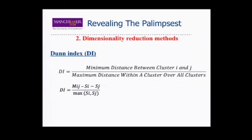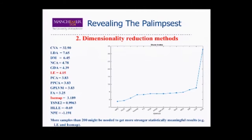Another index I tried is the Dunn index — basically minimum distance between cluster i and j over the maximum distance in a cluster over all clusters. This also gave good results, though maybe not as good as the Davies-Bouldin index. In this case, a higher value is better. Again, canonical variance analysis, linear discriminant analysis, and diffusion maps have the best values. The difference between CVA, which is 32, and the second method, linear discriminant analysis at 7.65, is quite large. For this index, it might be needed more than 200 points in order to be sure of the results.